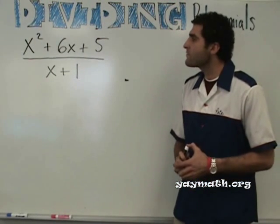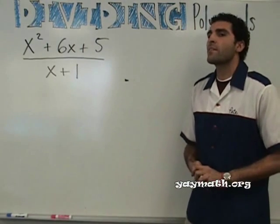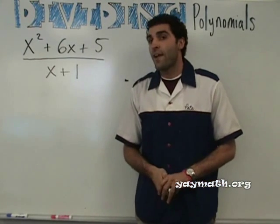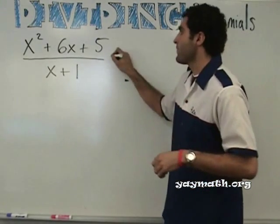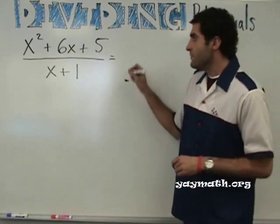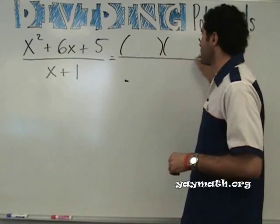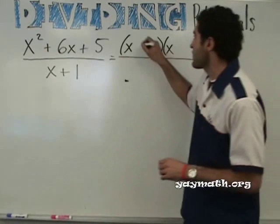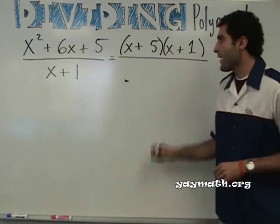Does it look like something you know how to do? Yes. Could I suggest one possible way of doing it would be to factor the top? Can you factor the top? I think so. Let's factor the top. What would the top be factored? X. So we have X and X. Five times one. Five and one. They're both plus.